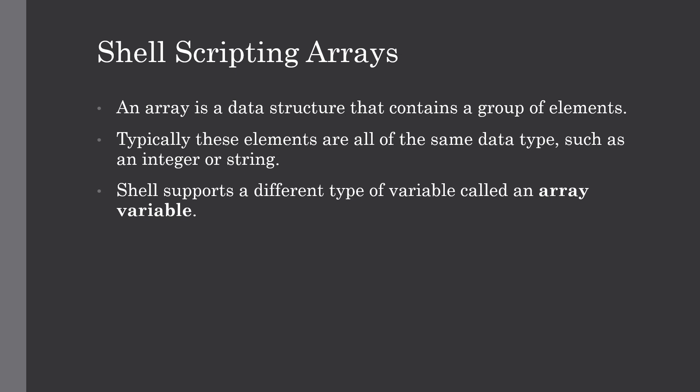A shell variable is capable of holding a single value. These variables are called scalar variables. An array is a data structure that contains a group of elements. Typically these elements are all of the same data type, such as integer or string. If you have many elements of the same type, you don't need to create separate variables for each of those items.